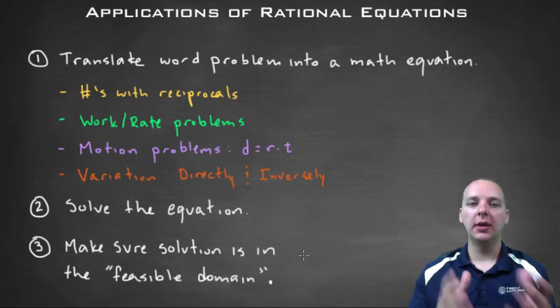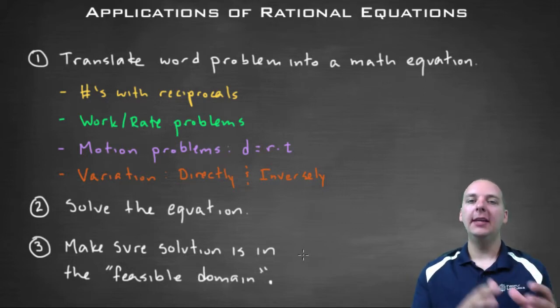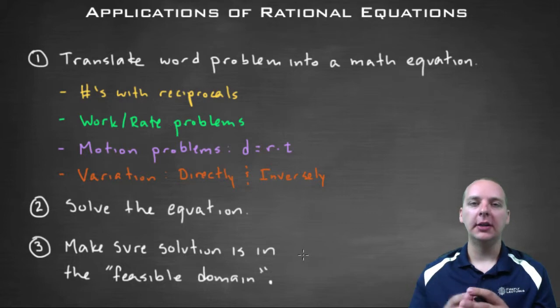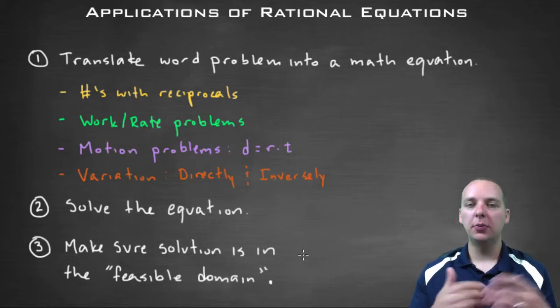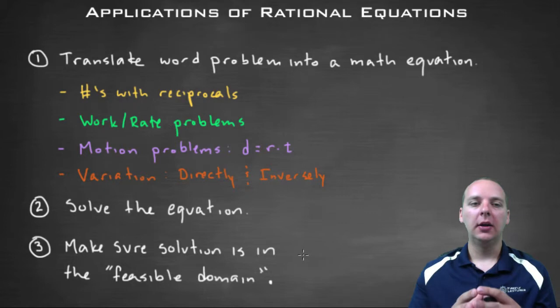Let's go through these steps very fast, and then over the course of the next few videos, we'll go specifically through different types of examples. Number one: first thing you're going to do when you get an application problem is read the word problem and try to translate it into a math equation so that you can solve it.